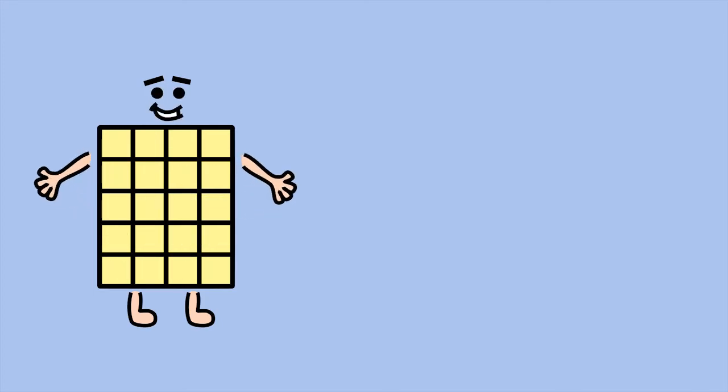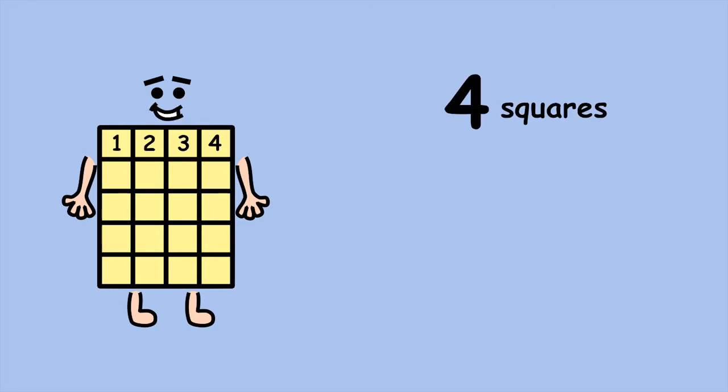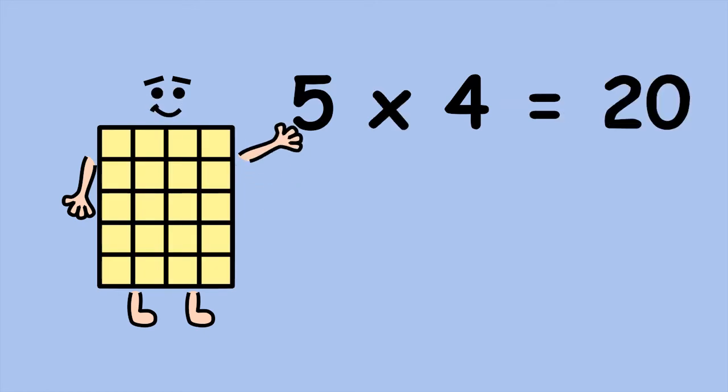If you know your times tables, there's an even quicker way of working out my area. We know each row has four squares. Now, how many rows are there? Five. Five groups of four, or 5 times 4 equals 20.